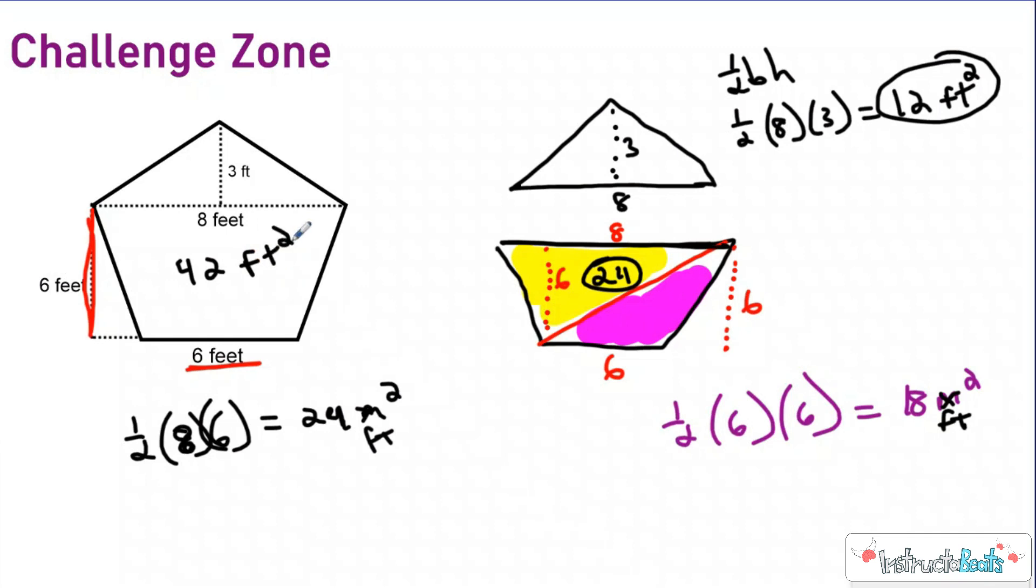For my trapezoid, I know the triangle up top had an area of 12 feet squared. So when I add those together, the total area for my entire trapezoid is going to be 54 feet squared. So hopefully you got that one right.